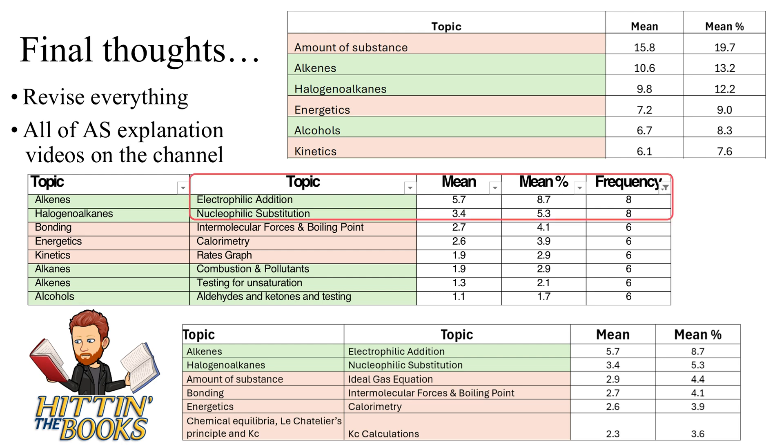And you can see that those two mechanisms not only carry the most marks but come up nearly every single year. Only one year were electrophilic addition and nucleophilic substitution not tested on AS chemistry paper 2.